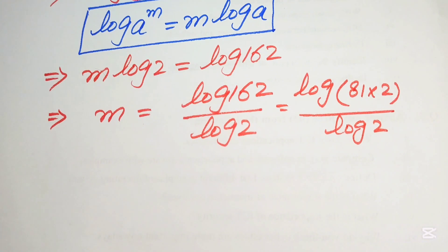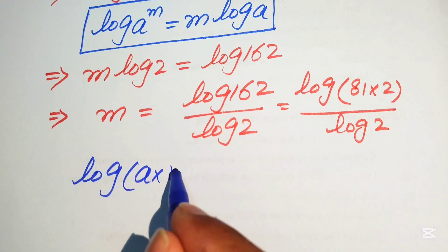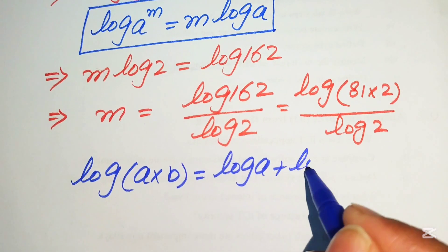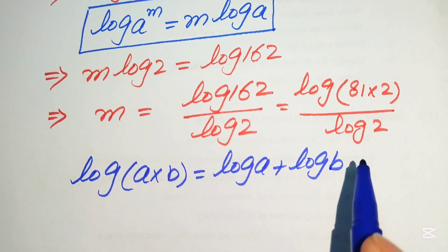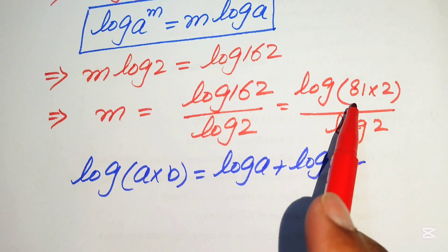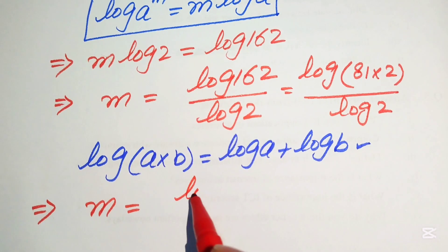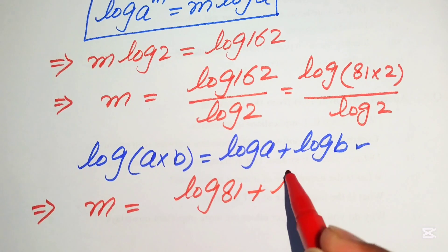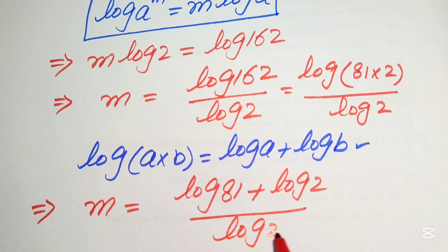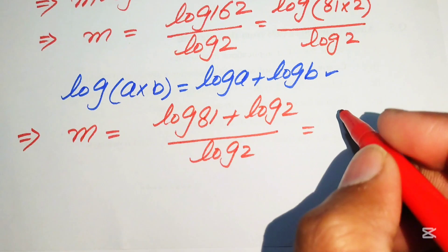We apply another logarithm property in the numerator: log(a times b) equals log(a) plus log(b). Applying this, the expression becomes m equals log(81) plus log(2), all divided by log(2).